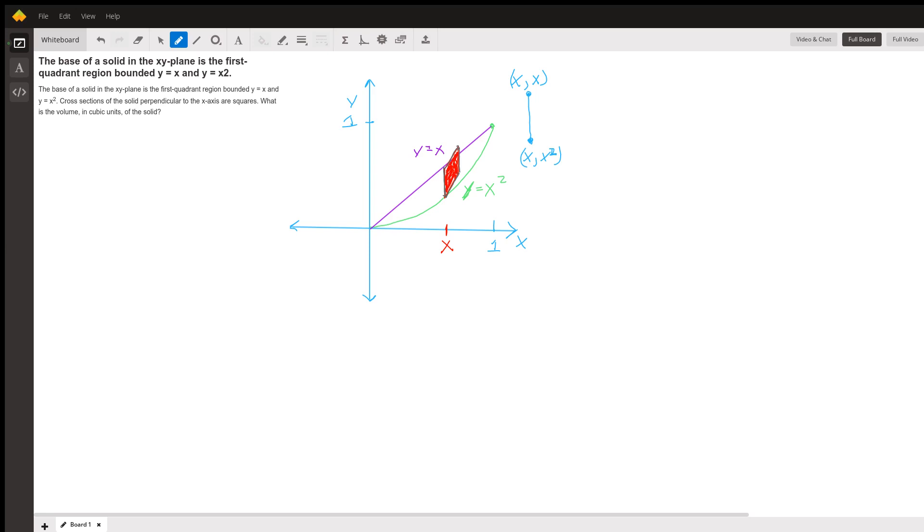The coordinates of the top of that line segment are x comma x because y equals x. And the coordinates of the bottom of that line segment are x comma x squared because y equals x squared on the curve at the bottom.